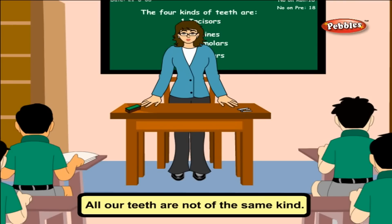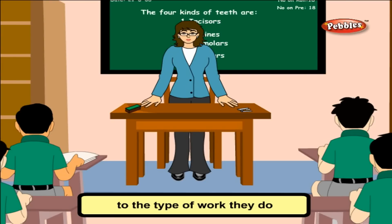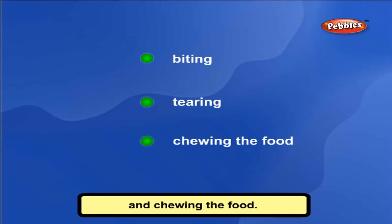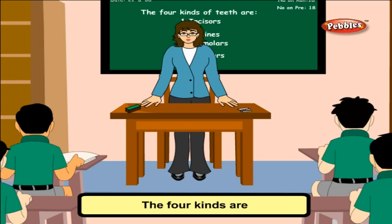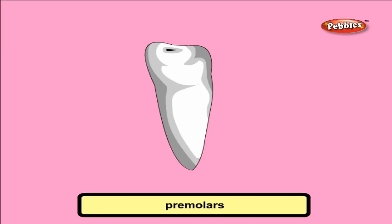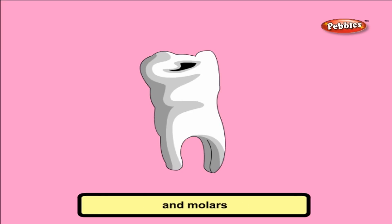All our teeth are not of the same kind. They are of four kinds according to the type of work they do, like biting, tearing and chewing the food. The four kinds are incisors, canines, premolars and molars.